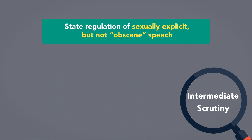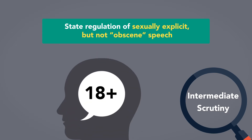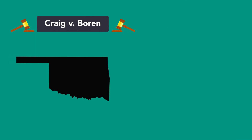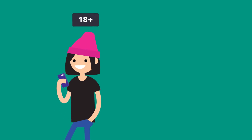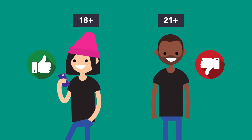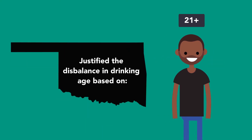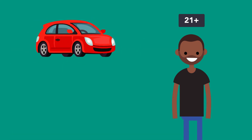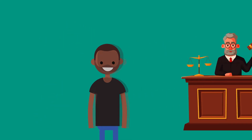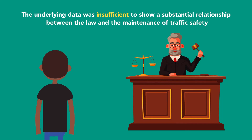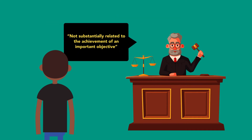Medium or intermediate scrutiny has also been applied by lower courts to state regulation of sexually explicit but not obscene speech, and to certain types of content-neutral speech. The Supreme Court first used intermediate scrutiny to strike down an Oklahoma statute that discriminated based on sex in setting the statutory age for consumption of alcohol. The act permitted women 18 or older to consume alcohol, but prohibited men under 21 from doing so. The state of Oklahoma sought to justify the disparity in permissible drinking age based on traffic court, criminal court, and insurance claims evidence. The court disagreed, finding the underlying data was insufficient to show a substantial relationship between the law and traffic safety, and so was not substantially related to the achievement of an important objective.